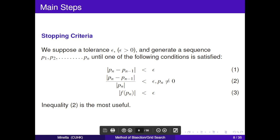But when to stop it? We observe this stopping criteria. We suppose a tolerance epsilon. Epsilon is larger than zero. And generate this sequence until one of the following conditions is satisfied. The first one, the second one, and the last one. Generally speaking, n equals 2 is most useful.